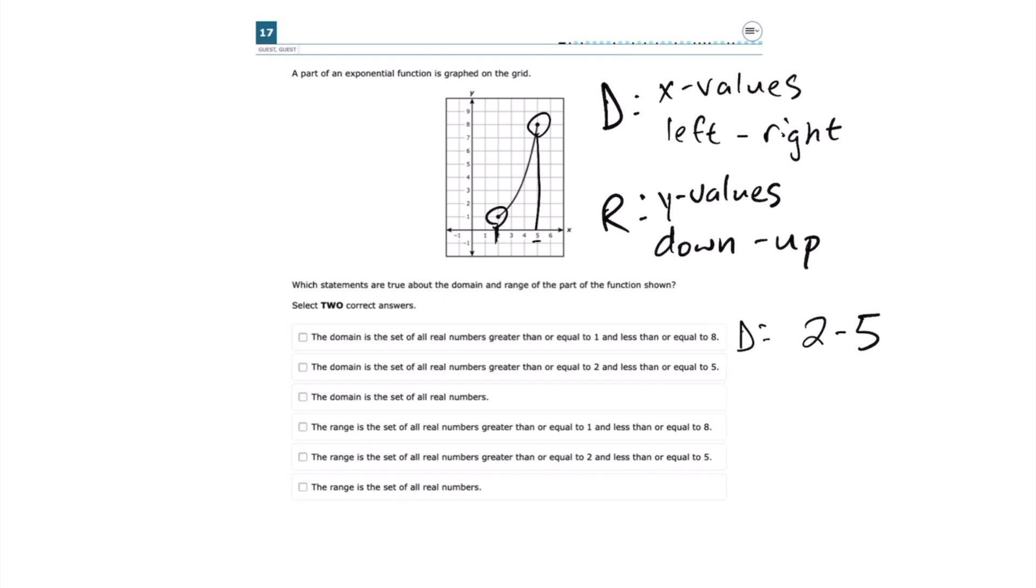So the domain is all real numbers greater than or equal to 2 and less than or equal to 5. Looking at the answer choices, we see the second answer choice would be one of our answers. The domain is the set of all real numbers greater than or equal to 2 and less than or equal to 5.